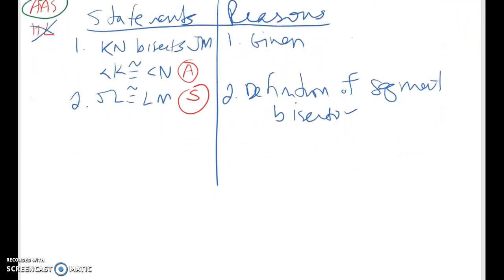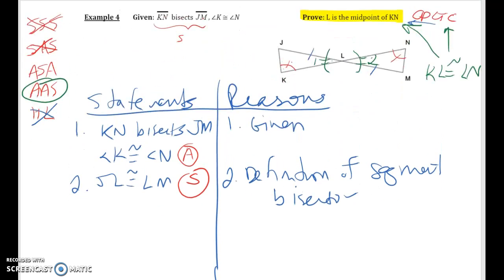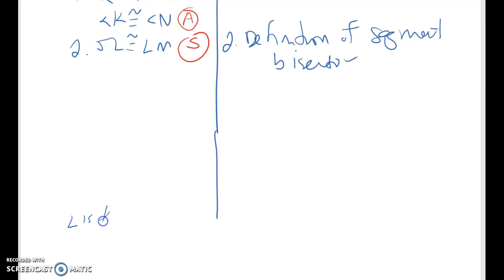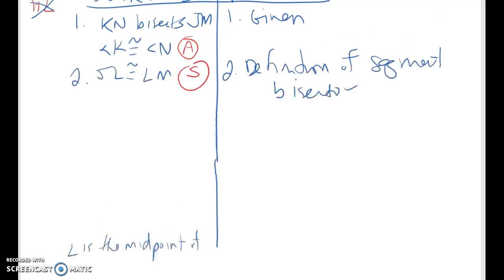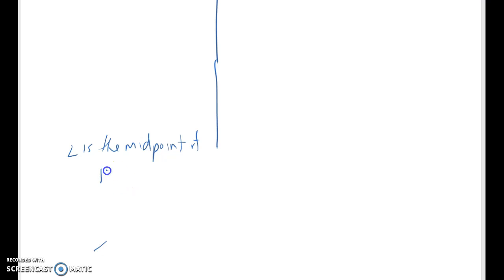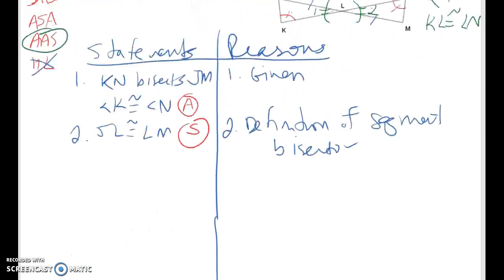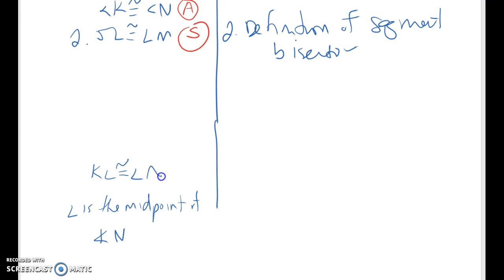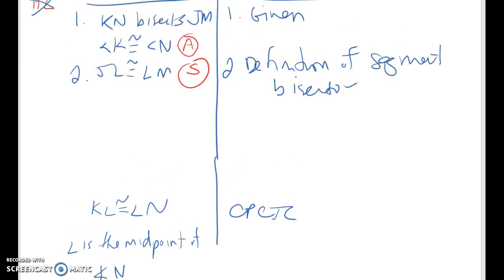If I know things I'm going to be using in the proof later on, I can set up the bottom of my proof without filling in the top of it just yet. If I want to prove that L is the midpoint of KN, I'm going to need to show that KL is congruent to LN.